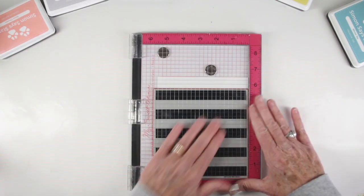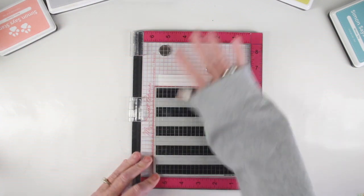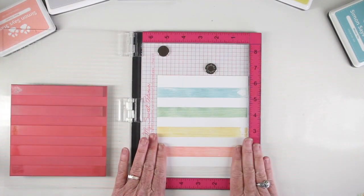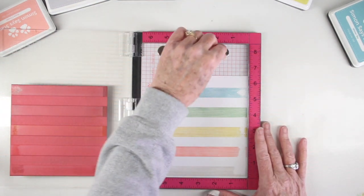Next I'll shut the door of my MISTI and give this some pressure. I like to use my sleeve to get a really nice slick surface. So there is my first impression.